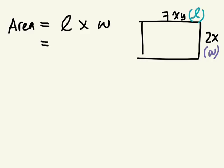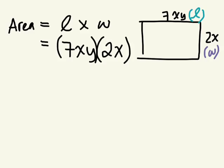So we're going to multiply the length and the width. So 7xy times, I'm going to use brackets, times 2x. We're multiplying these two terms together, multiplying the length times the width. How do you multiply a monomial by a monomial? We're going to multiply the coefficients first. So 7 times 2, 14.